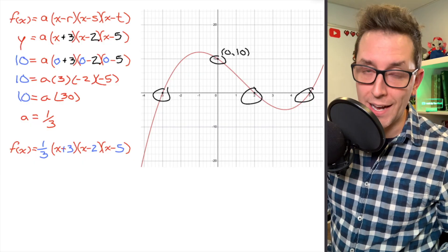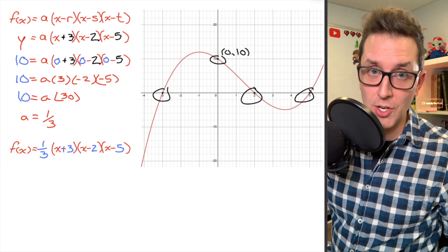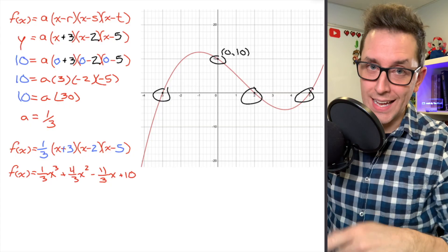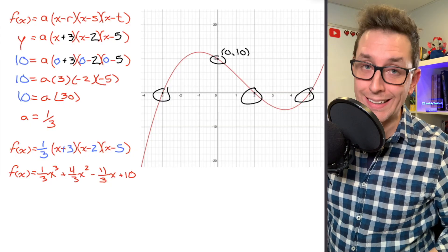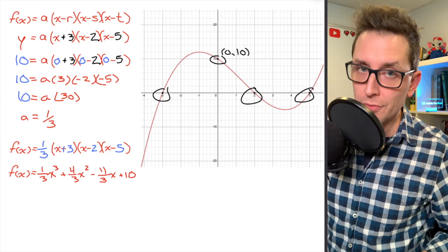Now, it is written in factored form, and if that bothers you, you can, of course, feel free to go ahead and distribute, multiply, collect your like terms, and you're going to end up with this nasty little equation of the polynomial function right here, which I think is a lot worse. You can't actually see the x-intercepts by looking at that equation. I definitely prefer factored form.